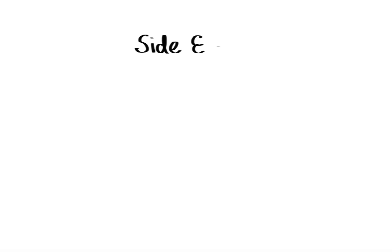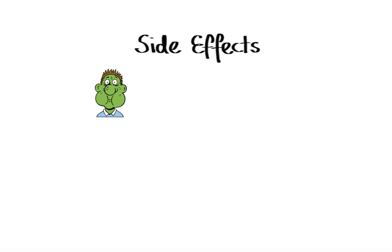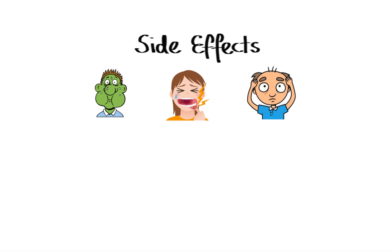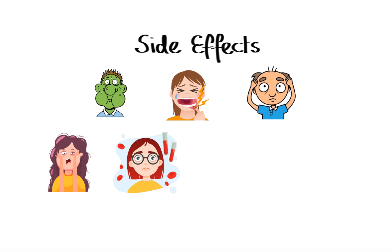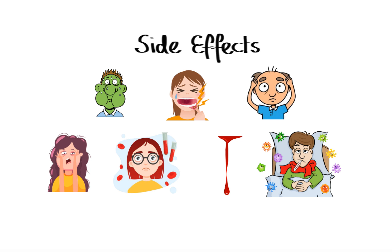When it comes to side effects associated with anti-metabolites, the ones that occur commonly include nausea, vomiting, mouth sores, hair loss, and myelosuppression, which can lead to fatigue, anemia, bleeding, or increased risk of infections. And with that, I wanted to thank you for watching. I hope you enjoyed this video, and as always, stay tuned for more!